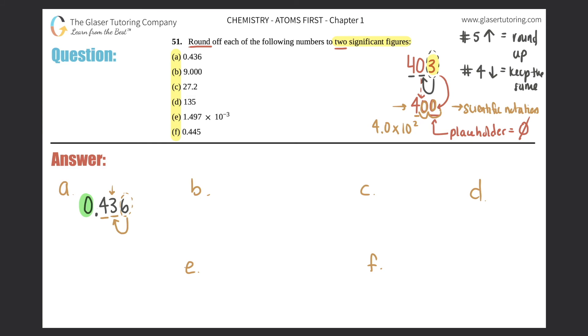Six is five and above. So you would round this, the three to a four. So it would be 0.44. And I have two sig figs. So that would be the answer to A.